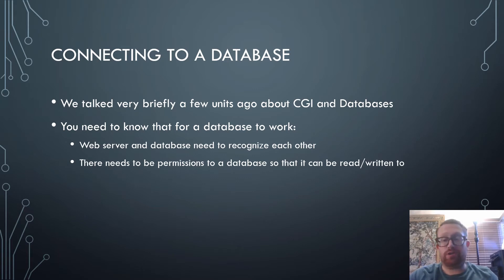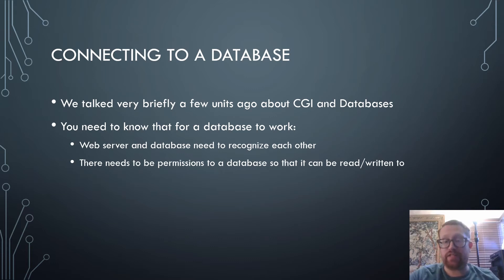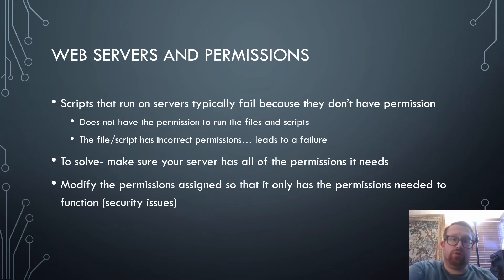The first thing we're going to talk about is connecting to a database, which we touched on briefly a few units ago when we talked about CGI. What you need to know is that databases need to have a server and the database recognize each other — there needs to be communication back and forth. There also needs to be permissions so the database can be read or written to. So: web servers and permissions with databases.